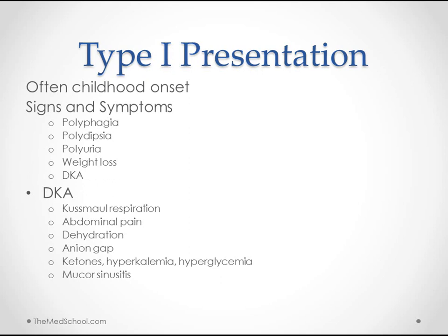Type 1 we classically think of as childhood diabetes. It can happen at any time during life and can be initiated by different factors, but most often you're going to see it in children. If we catch them early, we'll see polyphagia, polydipsia, polyuria, and some weight loss. Some of them will be coming in with DKA — diabetic ketoacidosis — which we hope to avoid. I won't cover DKA pathology in detail here as we'll probably do another video just on DKA.